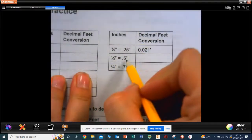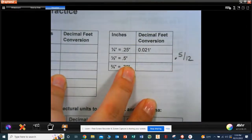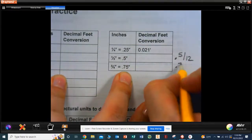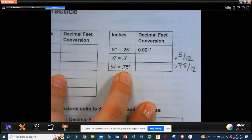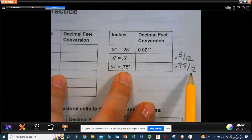This would be 0.5 over 12. This is 0.75 over 12. So what would be 0.5 over 12 equal to? What would be 0.75 over 12 equal to?